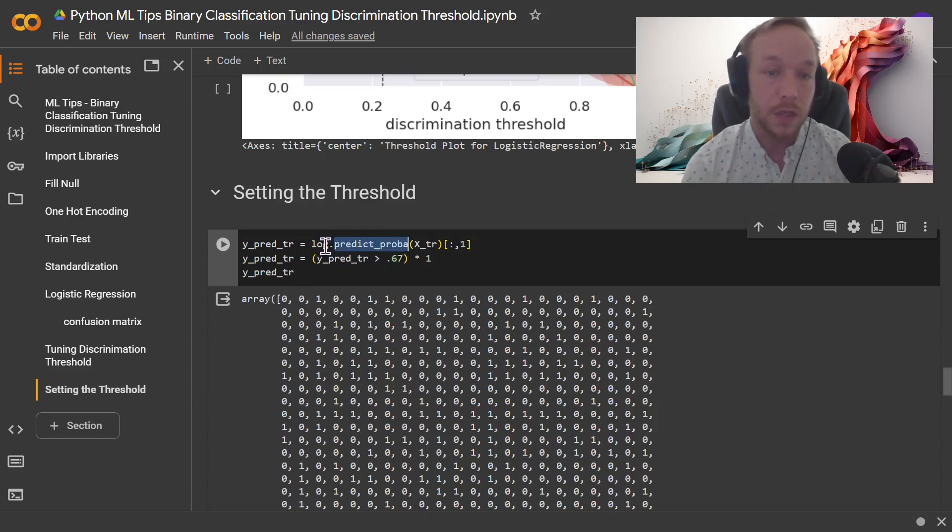And the way that I do this is I do log dot predict_proba. Know that there's two columns that come out of this. There's one for every class. If I had three classes, there'd be three columns. So what here I'm doing in this second column, which would be, it's always going to be alphanumeric. So 0, 1, 2, 3, or A, B, C.